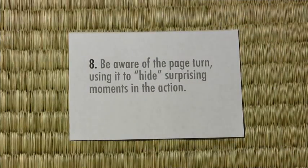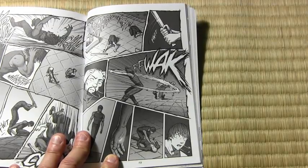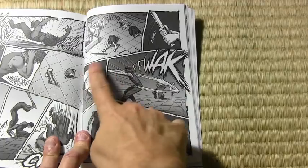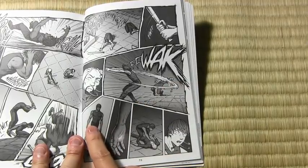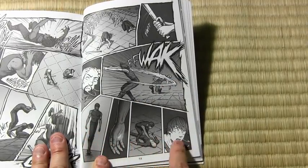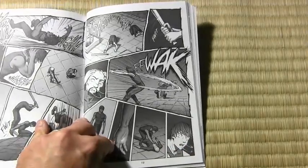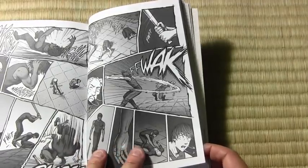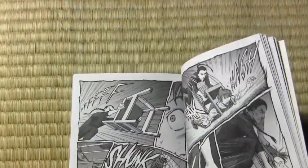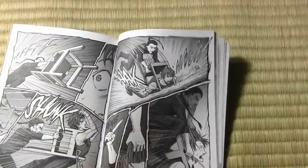Number eight: be aware of the page turn, using it to hide surprising moments in the action. The page turn is something I've become more aware of over the years. In this fight scene with Brody, we see him having defeated one guy — he drops his baseball bat, comes over, and then there's the big turn. It's no coincidence I put this at the bottom right-hand corner, because that hides and creates a moment of drama or mystery. The reader doesn't know what he's looking at or what will happen next — and boom, we see this guy coming with a chair, slamming into Brody and trapping him on the ground.